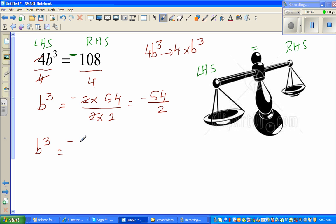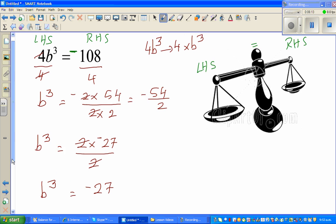So now minus 54 can be written as minus 2 times 27. Or let me put the minus with minus 27. So 2 times minus 27 is also minus 54, divided by 2, so this 2 and this 2 gets cancelled. So now b cube is minus 27.